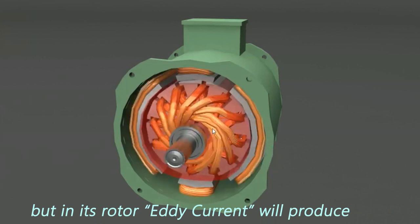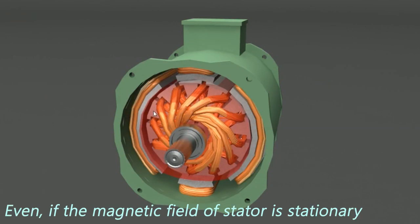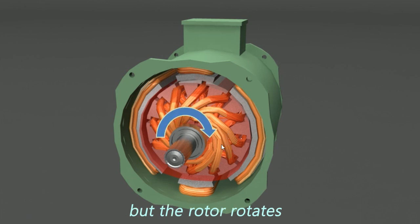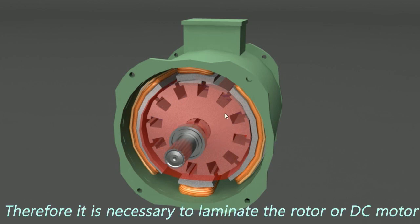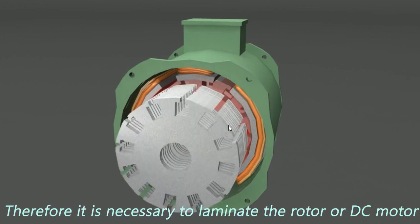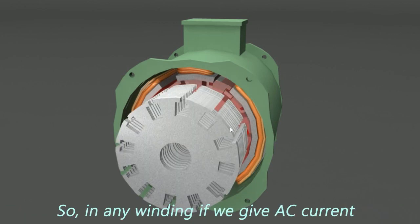But in its rotor, eddy current will produce. Even if the magnetic field of stator is stationary, but the rotor rotates, then the rotor feel like a magnetic field change. Therefore, it is necessary to laminate the rotor of DC motor.